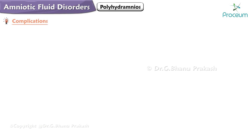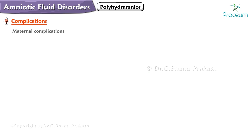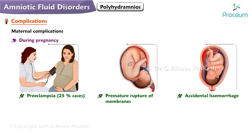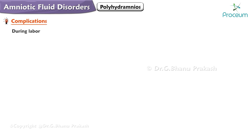Let's take a look at the complications. The complications of hydramnios are grouped into maternal, during labor, puerperium, and fetal. Maternal complications during pregnancy include an increased incidence of preeclampsia seen in 25% of cases, premature rupture of the membranes, accidental hemorrhage, malpresentation and persistence of floating head, and preterm labor either spontaneous or induced.